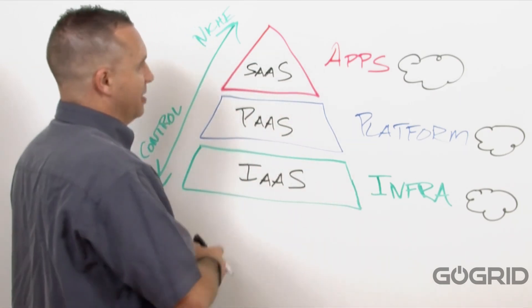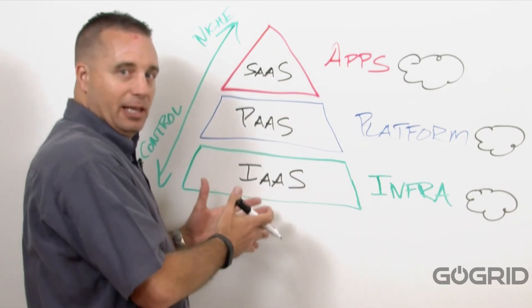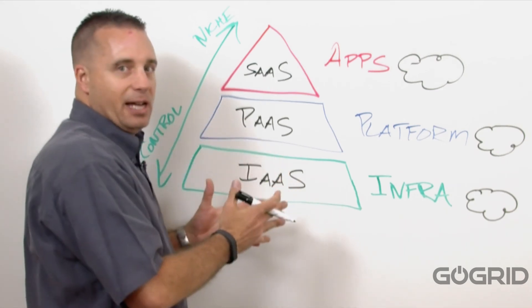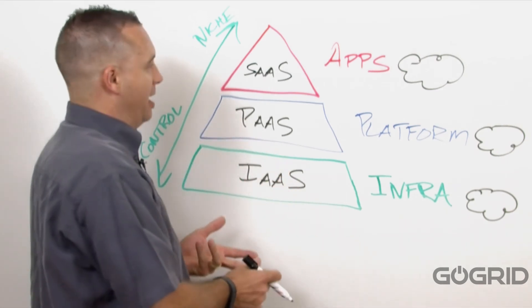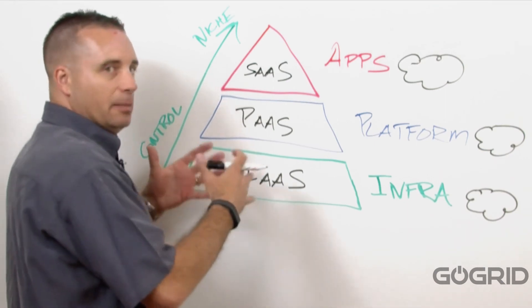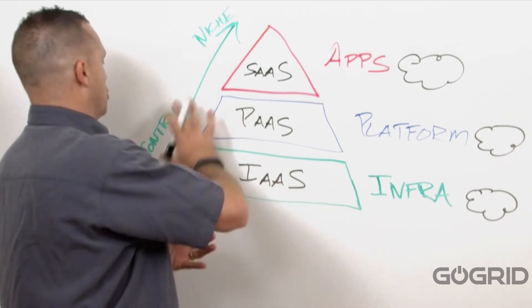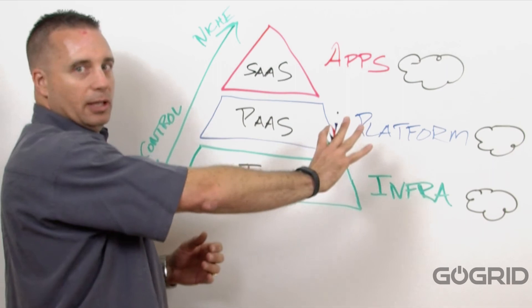Hopefully, this has explained the different layers of the cloud pyramid, the different types of clouds—public, private, and hybrid—and gives you a little bit better understanding as to where the control lies. You get more control at the foundation level, and you have more niche-oriented, very specific applications at the top of the pyramid.